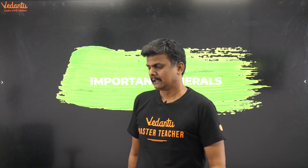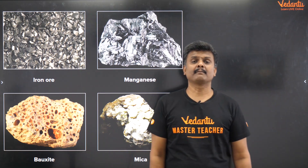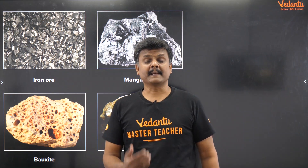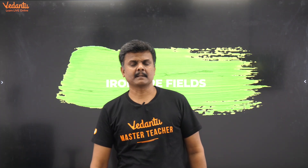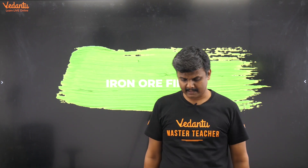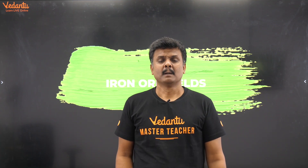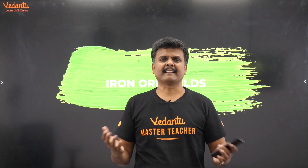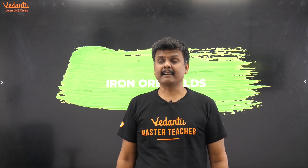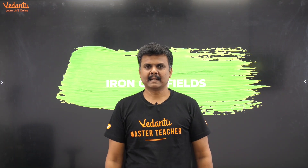We will be starting with iron ore. The four minerals we focus on today are iron ore, manganese, bauxite, and mica. Before looking at locations, let's consider why iron is important. From iron ore we get iron, which is used in the production of steel. Steel is required everywhere — in construction, vehicles, and manufacturing. So the major uses of iron are construction and the production and usage of steel.